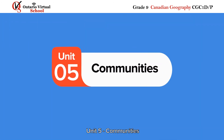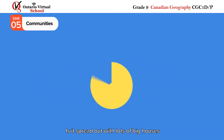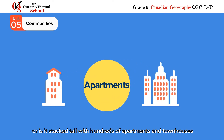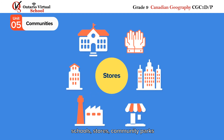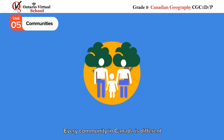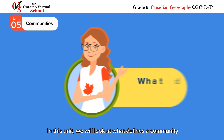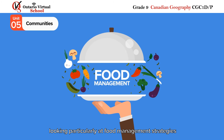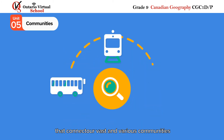Unit 5 – Communities. When you walk through your neighbourhood, what do you see? Is it spread out with lots of big houses? Or is it stacked tall with hundreds of apartments and townhouses? Are there places of worship, factories, schools, stores, community parks? Every community in Canada is different. In this unit, we will look at what defines a community and how communities rely on each other, looking particularly at food management strategies. We will also examine the transportation systems that connect our vast and various communities.